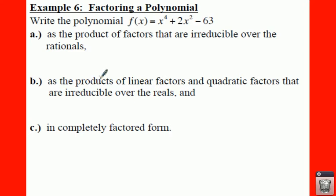Anyway, for example six, you write this polynomial as a product of factors that are irreducible over the rationals. That means that once you factor it the first time, all of your factors have to be rational numbers. That means you can't have any square roots, you can't have any imaginary values.